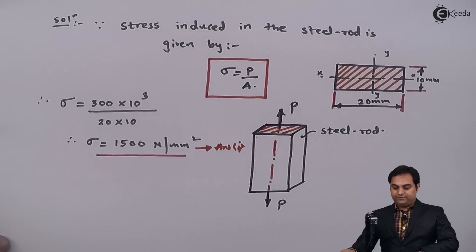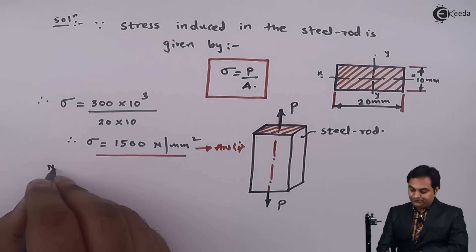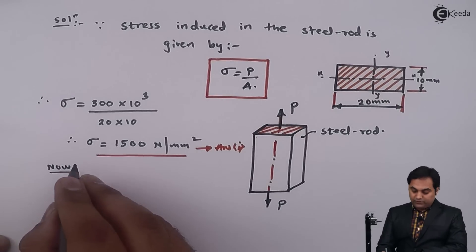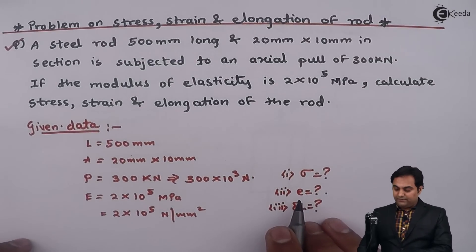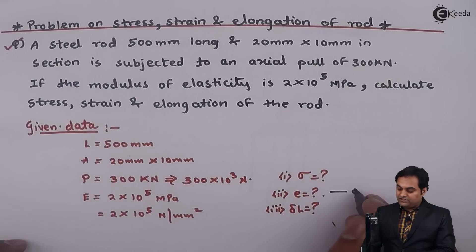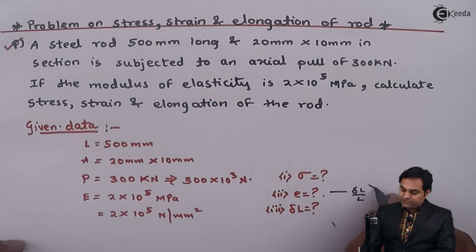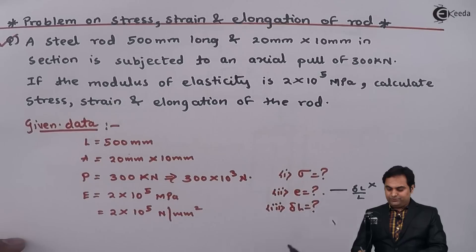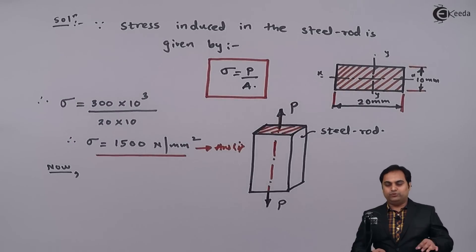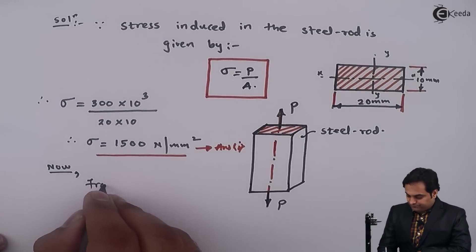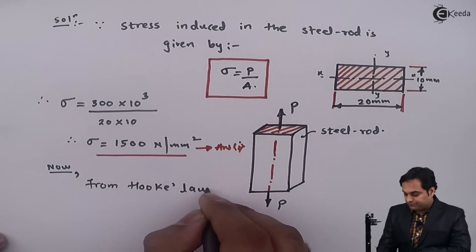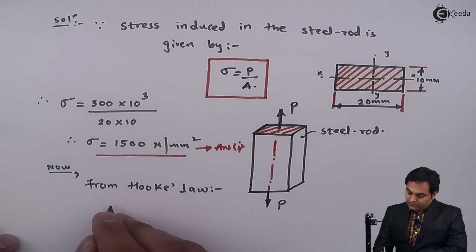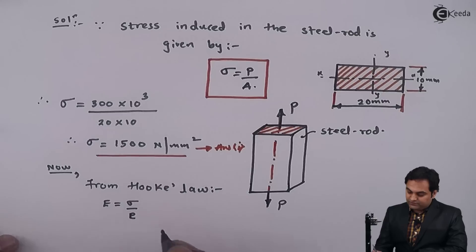This is the first answer. Next, we have to calculate strain. Strain can be calculated by change in length upon original length, but since change in length is unknown, we cannot use that formula directly. So for strain, we use the formula from Hooke's law, which states that Young's modulus E equals stress divided by strain.